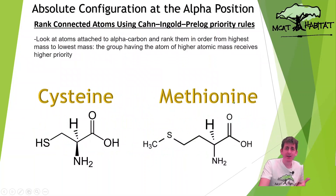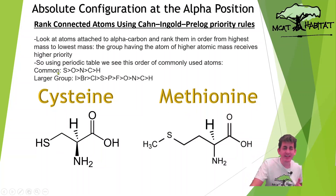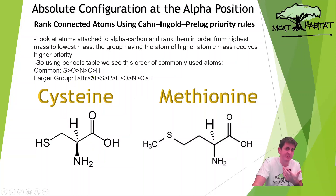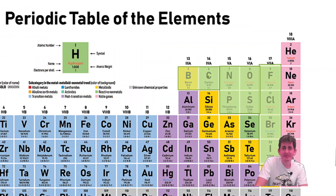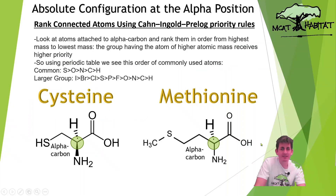So how do we do this? We look at the Cahn-Ingold-Prelog priority rules — big name, simple idea. We just rank the atoms connected to the chiral carbon in order from biggest to smallest. Some common ones: S, O, N, C, H. Just look at the periodic table — S is bigger than O, bigger than N, bigger than C, bigger than H. So H has our lowest priority. Iodine would have the highest priority of anything; we don't see it too often but we might come across it.